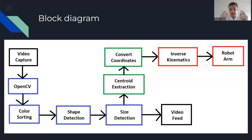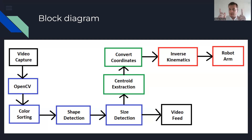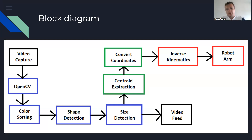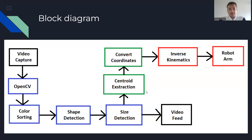From that, the center extraction point will then be converted from a 2D video screen coordinate system into a 3D Cartesian plane point, which will then be sent for inverse kinematics to move the robotic arm freely through three-dimensional space.